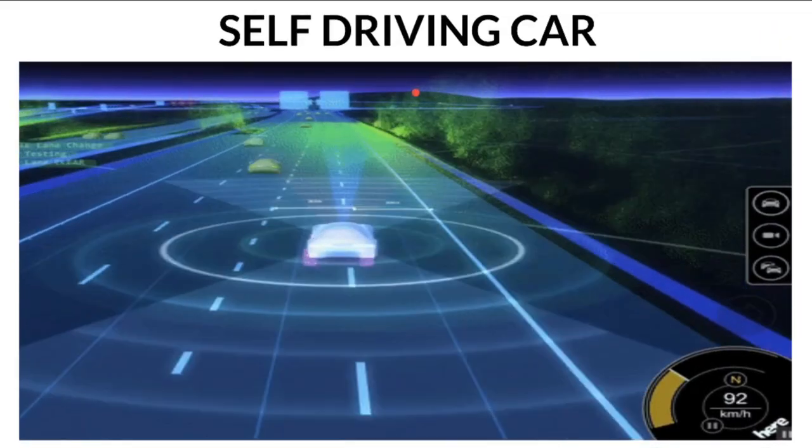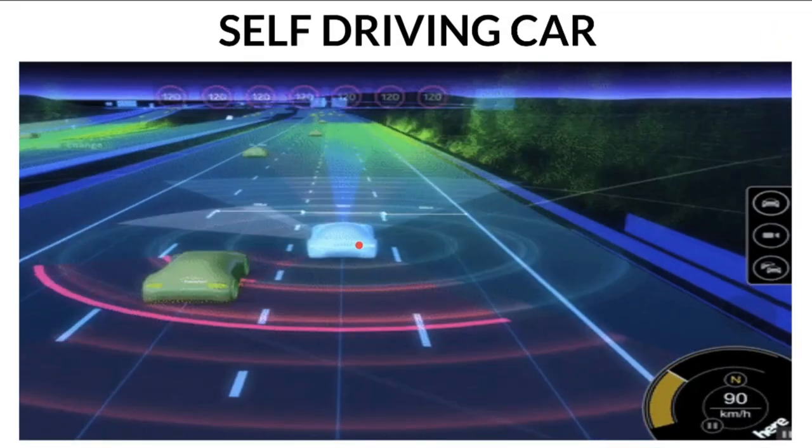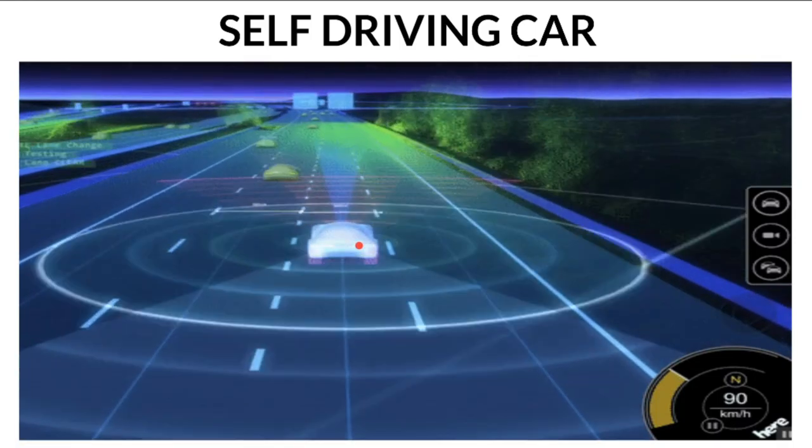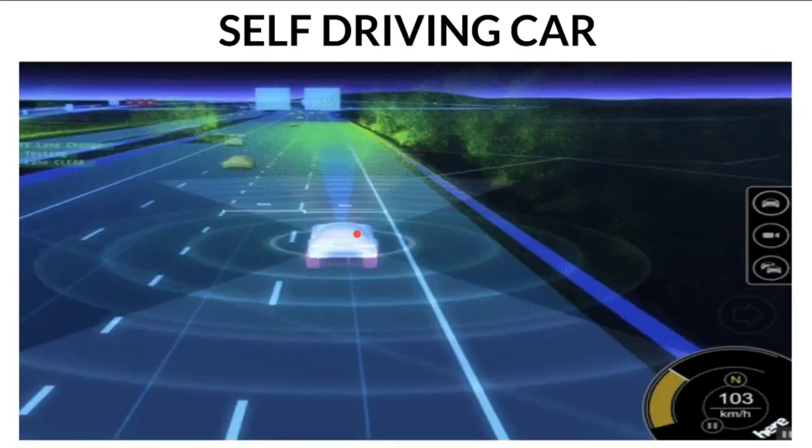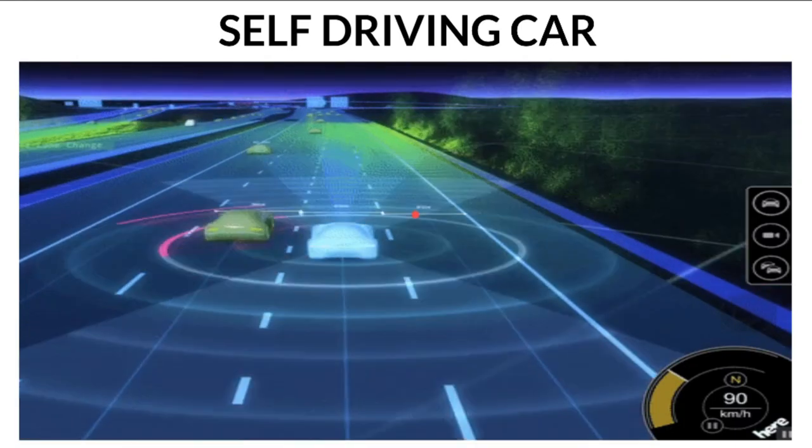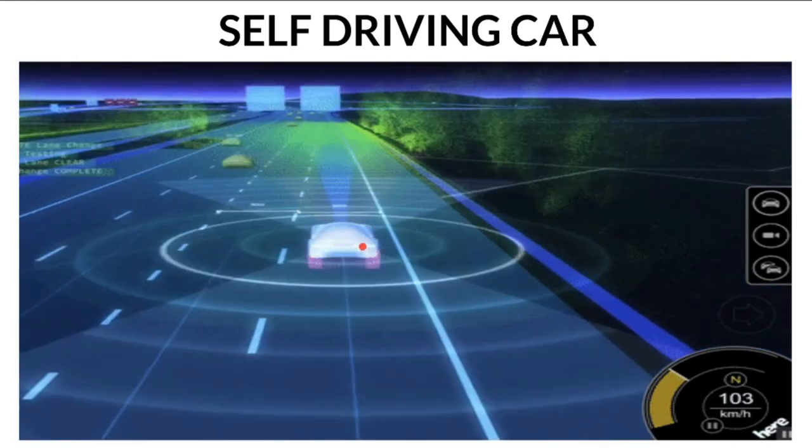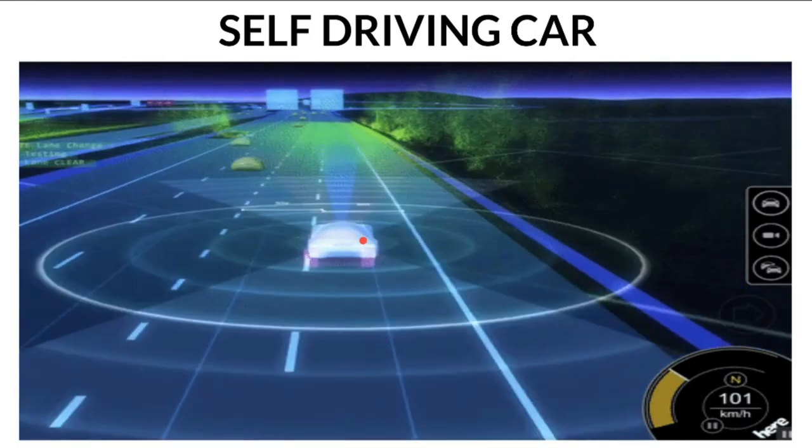In self-driving cars, there are many cameras attached. The cameras keep capturing objects on the road and have to understand the objects in the way and make decisions—whether to go straight, move right or left, or slow down.